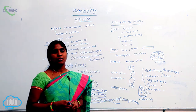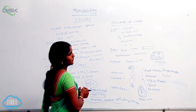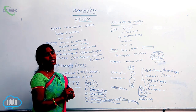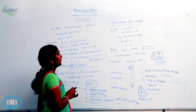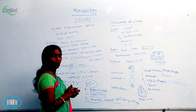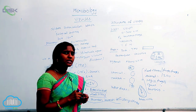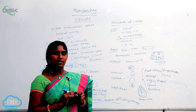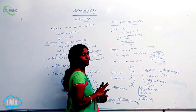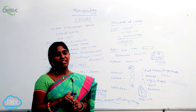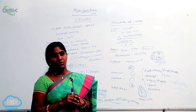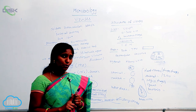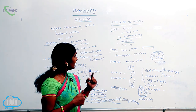The structure of viruses shows variation in size; they are very small and acellular. Virus particles are called virions. The size of viruses ranges from 10 to 300 nanometers. The smallest virus is the F2 bacteriophage, and the largest virus is the vaccinia virus.